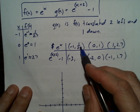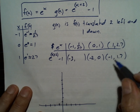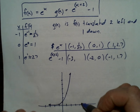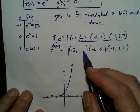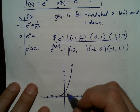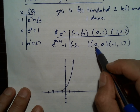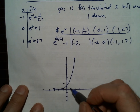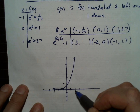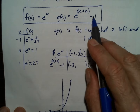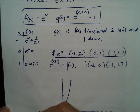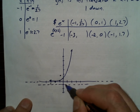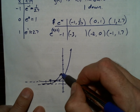We'll go (−1, approximately 1/3), (0, 1), (1, 2.7) for the parent function shown as a dotted line. Then the shifted function: (−3, approximately −2/3), (−2, 0), (−1, 1.7). The asymptote of the parent function got moved down 1, so the asymptote is now at y = negative 1. That helps you see where the graph is going to go.